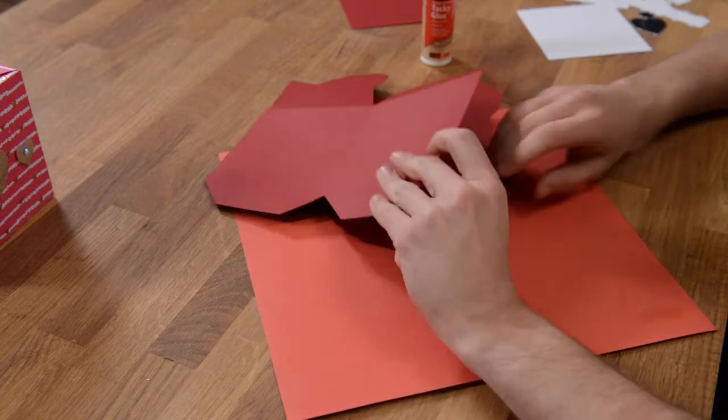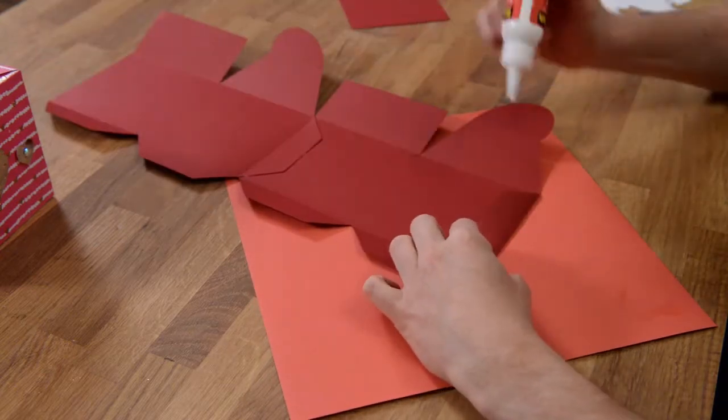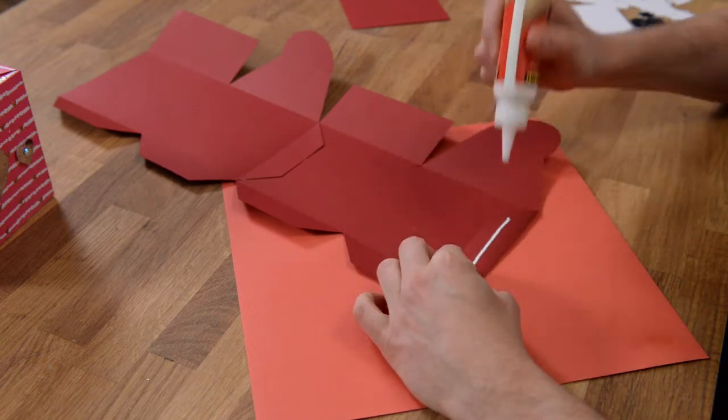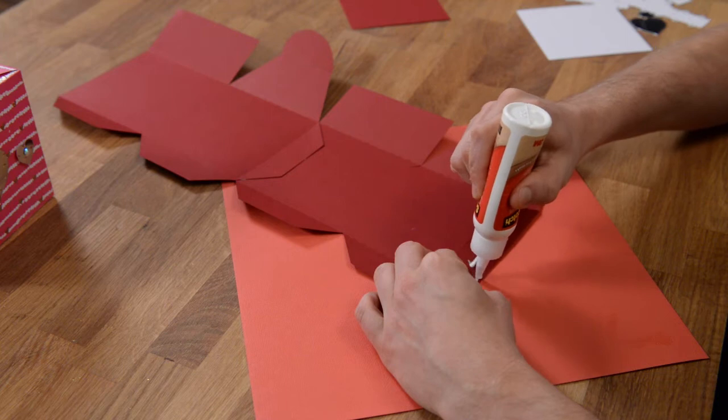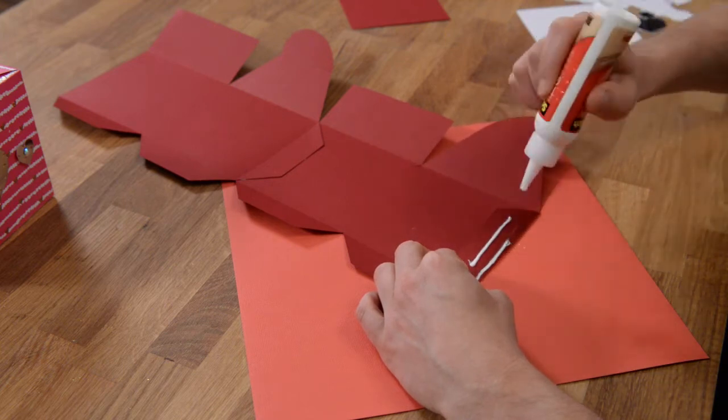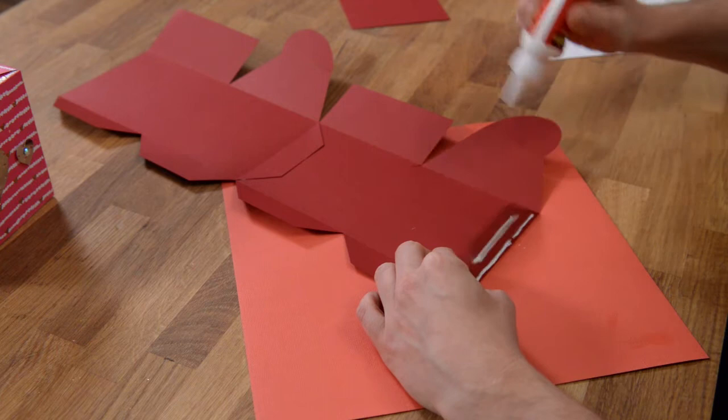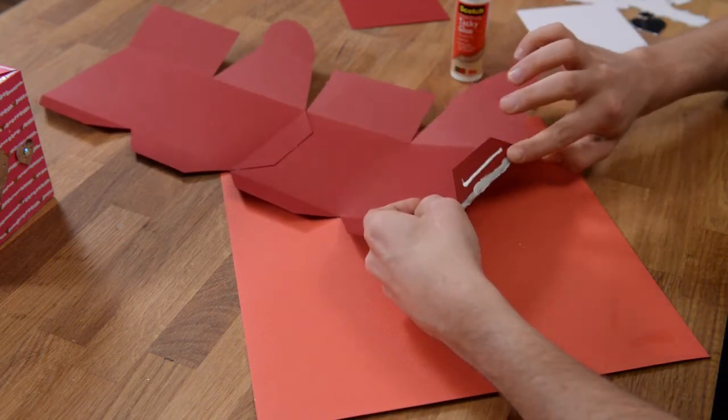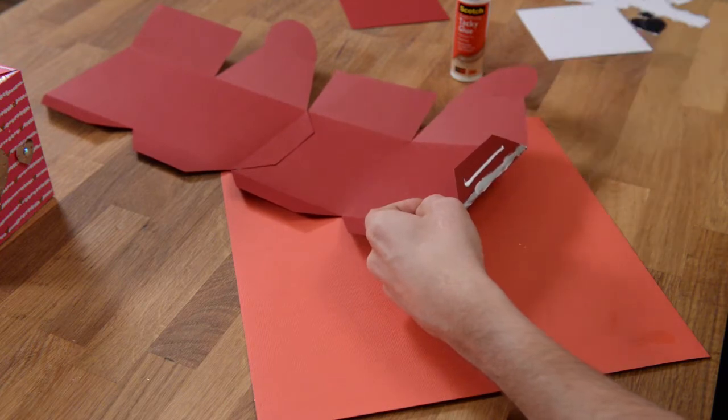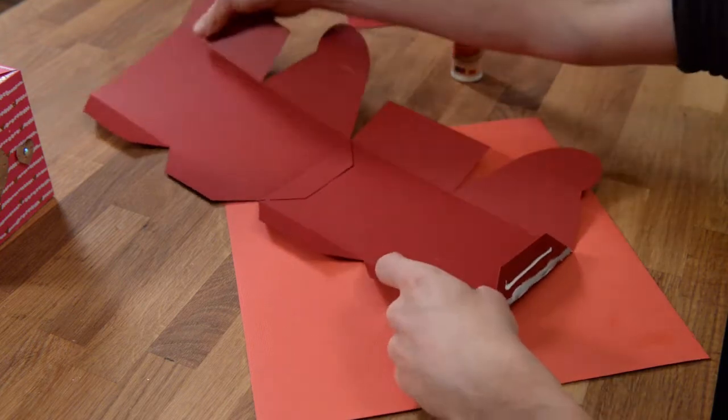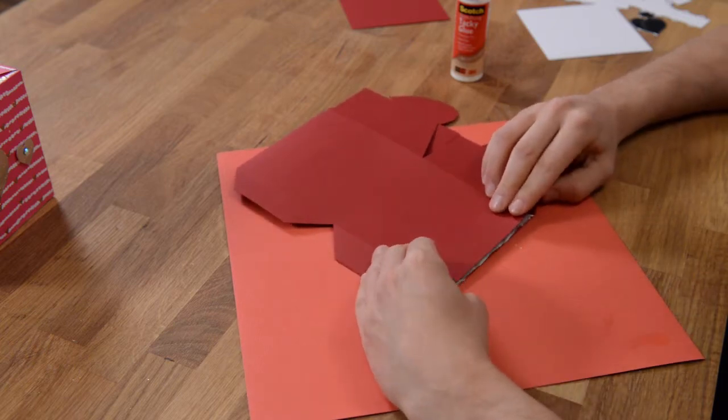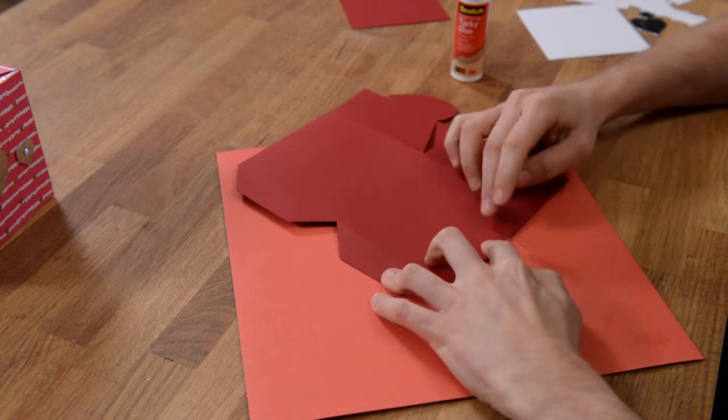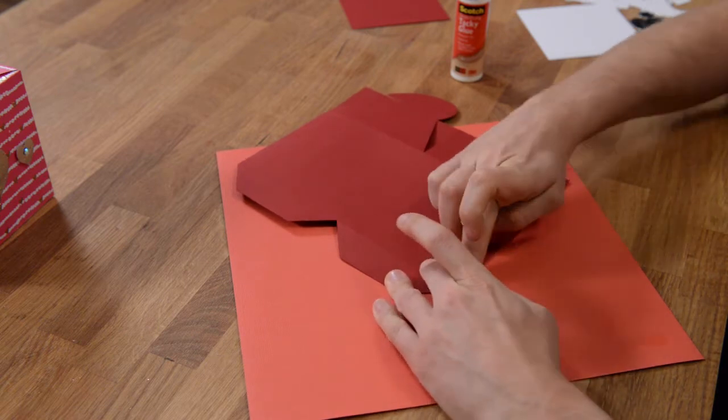And what we can do next is just put glue on this tab here. So a nice line in the middle and then a nice thin flat line towards the edge. I'm going to take that like I did the first time and just smear some glue out to the corners there, and take this and just close it up. Just make sure that these tabs here line up nicely, and that's going to ensure that your box is perfect.